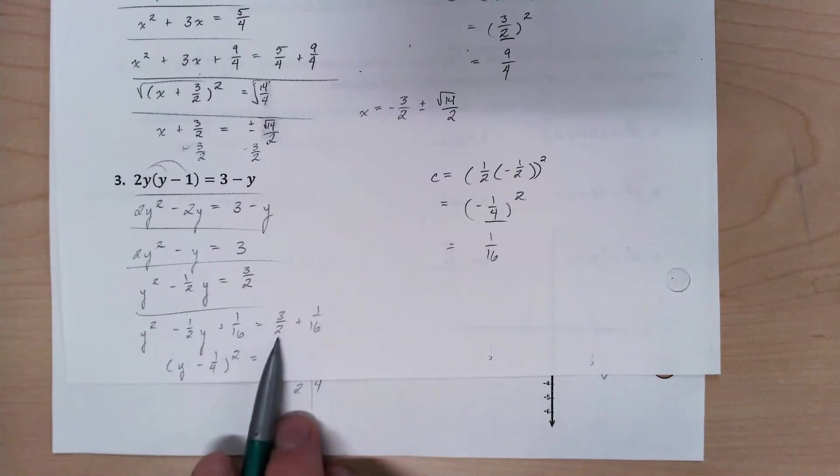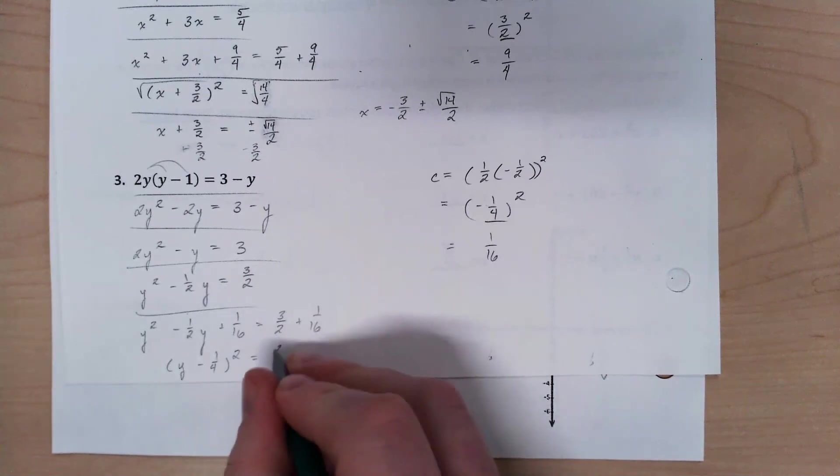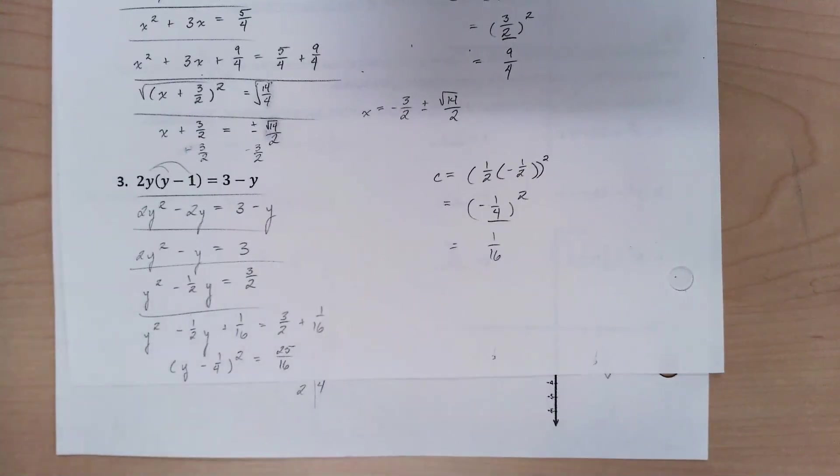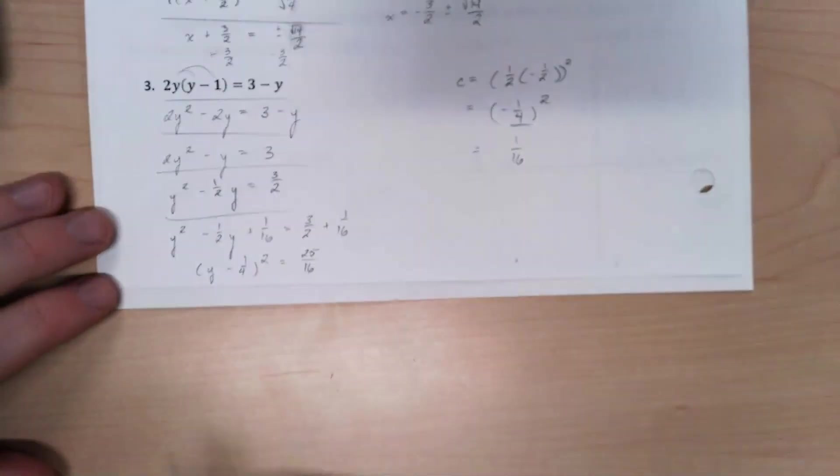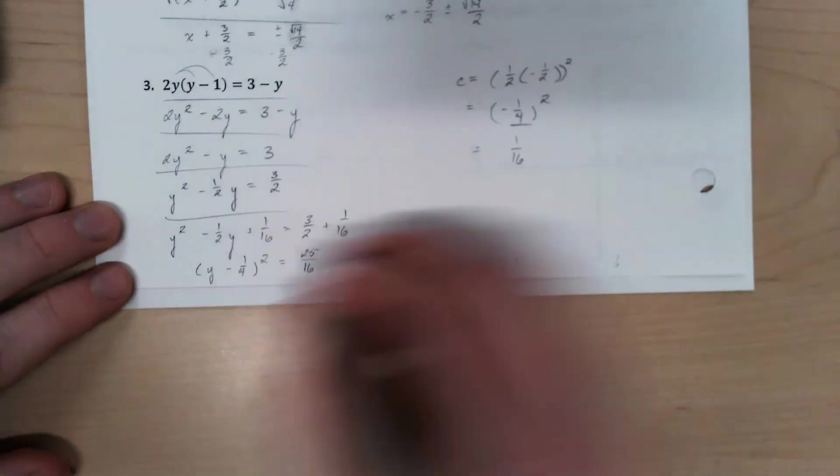Well, 3 halves, if you think about this as 16ths, should be 24 over 16. So we have 25 over 16. If you're seeing what I'm seeing, you're liking that fraction. So square root both sides here.